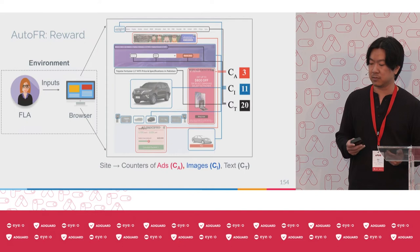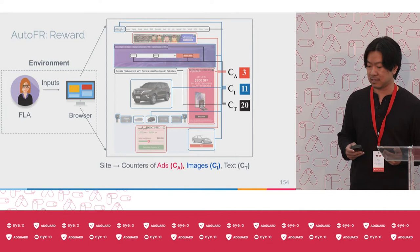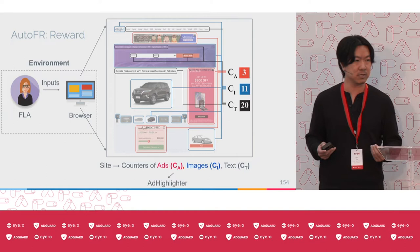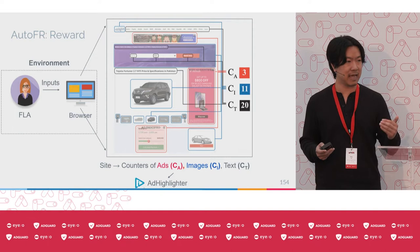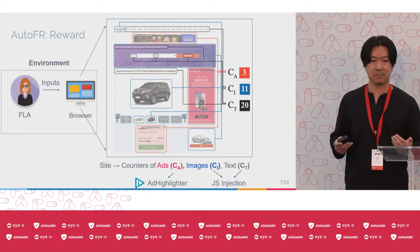To do this in an automated fashion, we represent the site as three basic visual counters: the count of ads, the count of images, and the count of text. We do this automatically using existing components — for example, an ad highlighter that annotates ads with ad transparency logos. For images and text, we write custom JavaScript, looking at image size (width and height) and opacity to see whether they're visually shown to the user, and for text we look at whether it's a text node type.